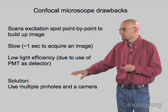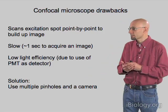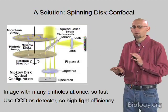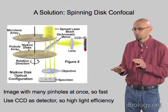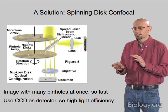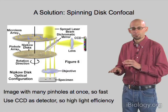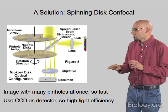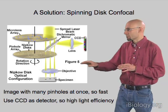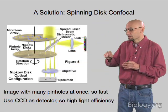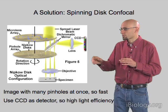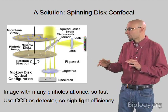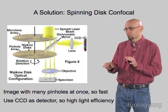Fortunately, there's a solution: instead of using a single pinhole and a PMT, we use many pinholes and a camera. This addresses both issues. The most common approach is called the spinning disk confocal. What a spinning disk confocal does is put a disk punched with many pinholes in it, arranged in a pattern such that if we rotate the disk around its axis, those pinholes will sweep out across every point in our sample once and only once — so for every rotation, we illuminate every point exactly once.